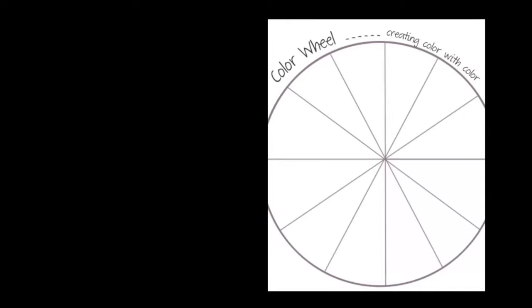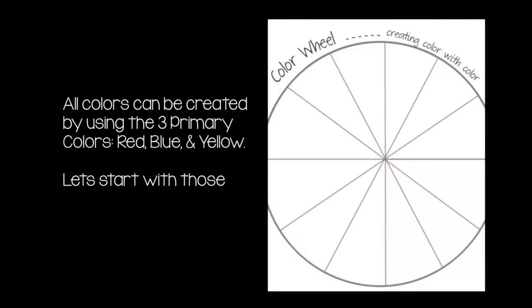From there, using your ruler, you will divide the circle into 12 sections. Try to get them close to even. If they're not exact, that's okay.